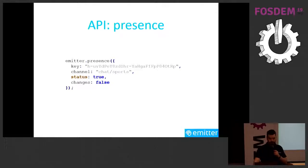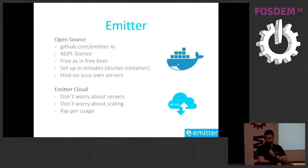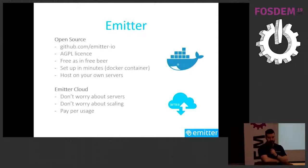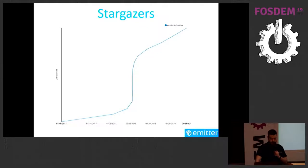Emitter is open source under the AGPL license — free as in free beer. You can set it up in minutes using a Docker container and host it on your own servers. Alternatively, you can use our cloud if you don't want to manage scaling yourself, and then you pay for usage.